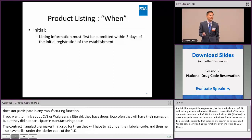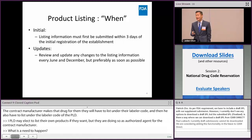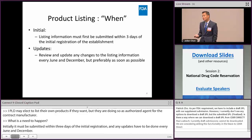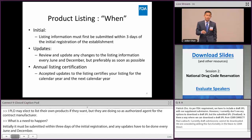A PLD may elect to list their own products as an authorized agent for the contract manufacturer. When does listing need to happen? Initially it must be submitted within three days of initial registration, and any updates have to be done every June and December. If something changed with your drug product today, you have until the end of December to get it updated, though we encourage updates as soon as possible.